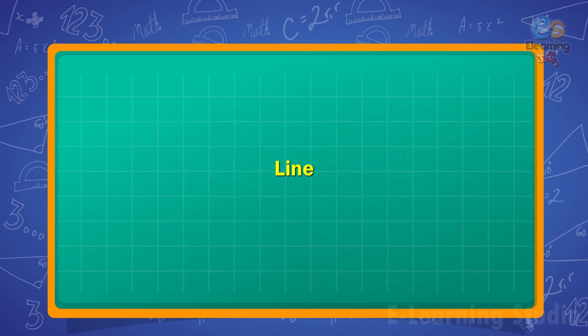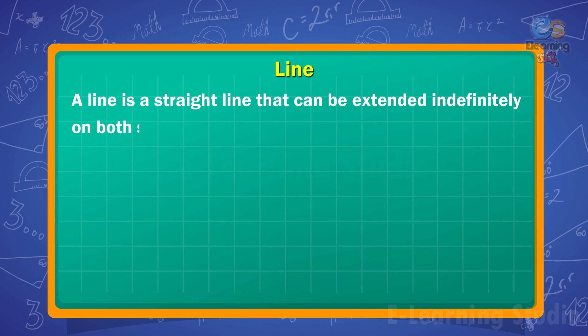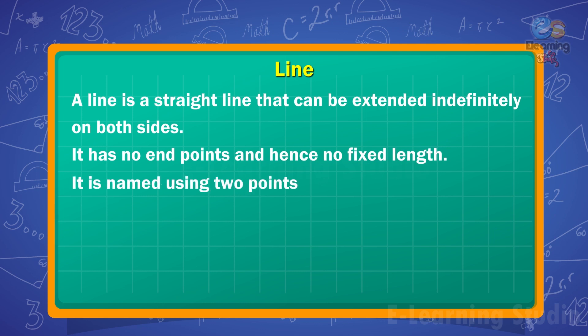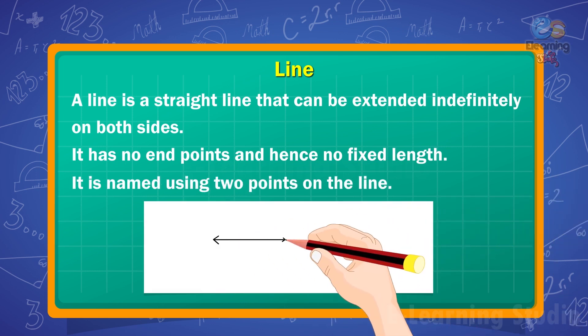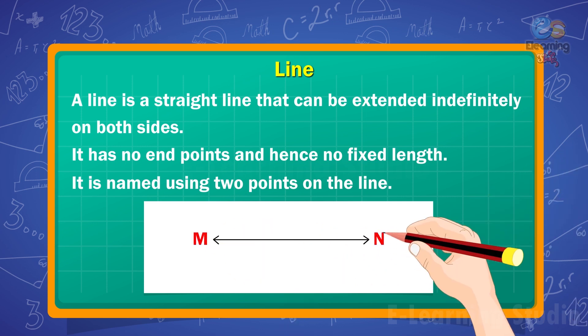Next is line. Children, a line is a straight line that can be extended indefinitely on both sides. It has no endpoints and hence no fixed length. It is named using two points on the line. It is named as MN, Line MN. It extends beyond the plane of the paper.